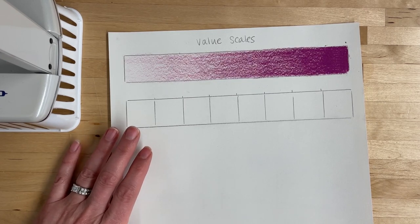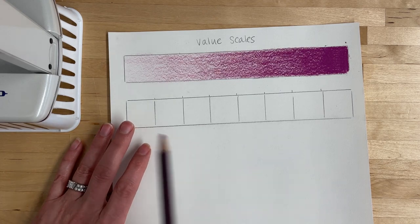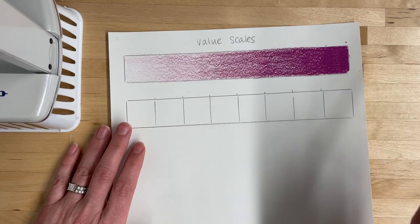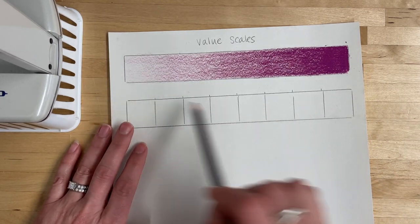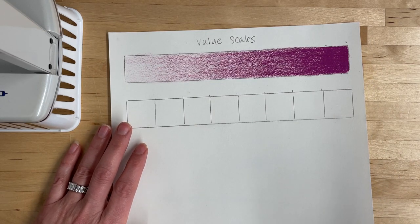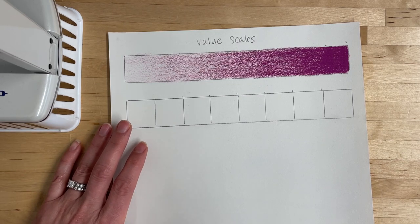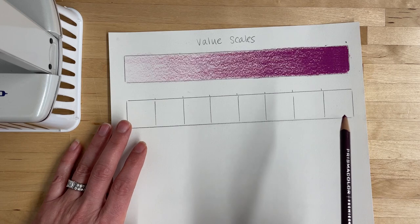If you're not in class and doing this on your own, don't worry if your value scale isn't perfectly marked out like we have with the stencils. Just feel free to freehand a rectangle, about seven or eight inches long by about an inch high. It doesn't need to be absolutely perfect, but you do want it to be big enough so you can really practice that skill.